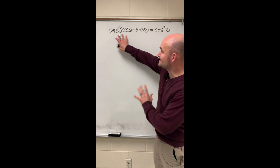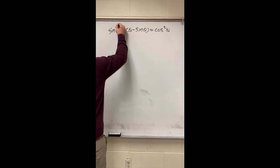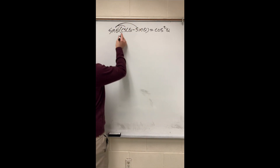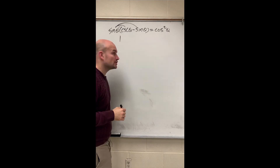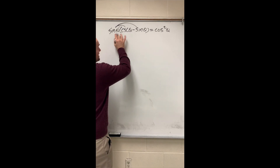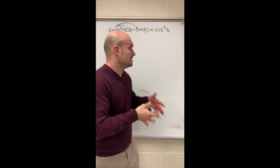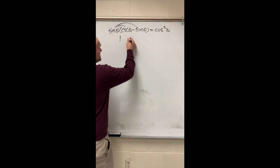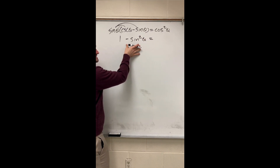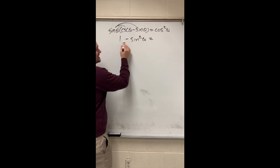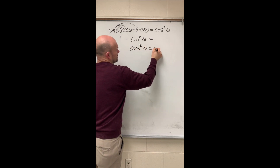If the identity is telling you to do multiplication, then probably try doing multiplication. The first thing we do is multiply sine of theta times cosecant of theta. These are reciprocals of each other, so that's going to go to one. Sine of theta times sine of theta is going to be sine squared of theta — just like x times x is x squared. Using my Pythagorean identities, I recognize that one minus sine squared of theta is equal to cosine squared of theta.